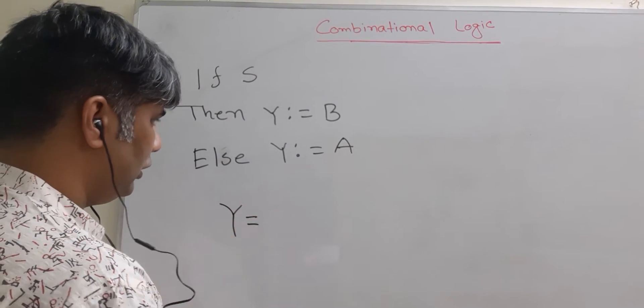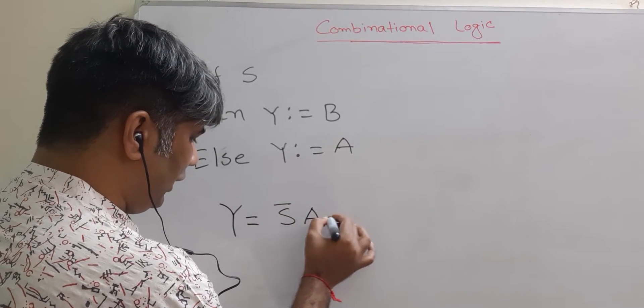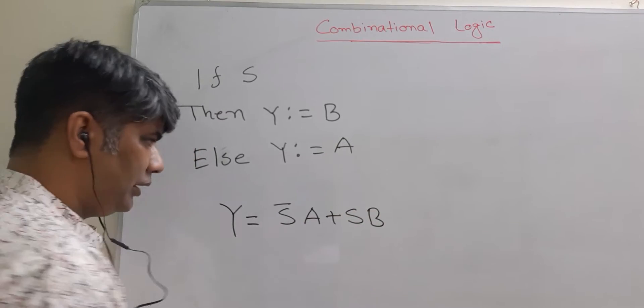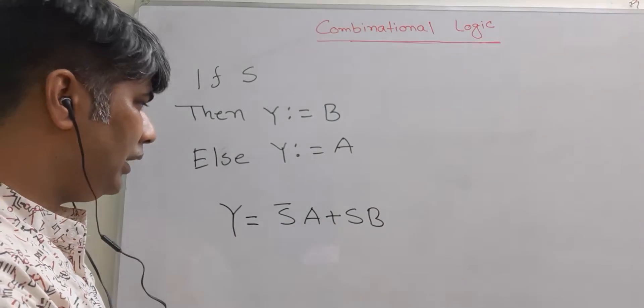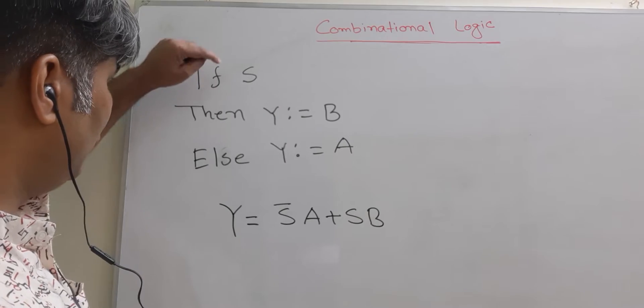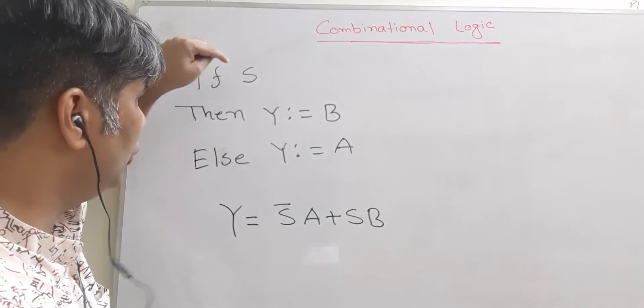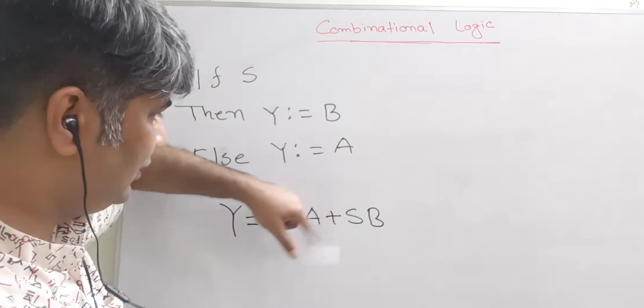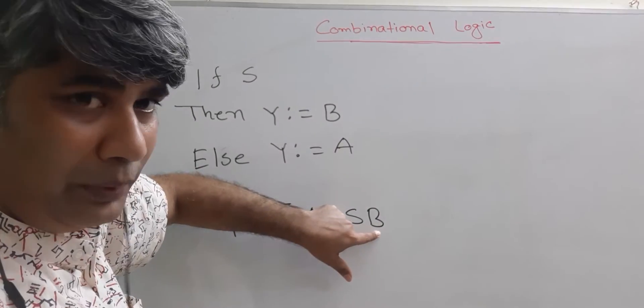Y equal to S prime A plus S B. If you look carefully, when S is true—let's say true means one—so when S is one, this becomes zero, that means this term altogether becomes zero. So the output will be B.